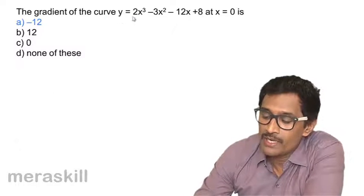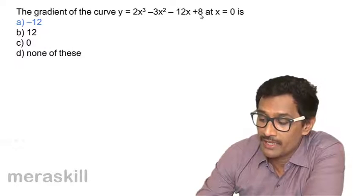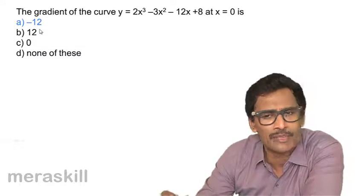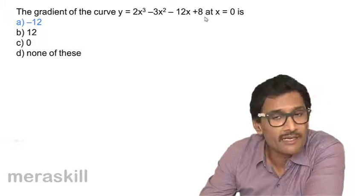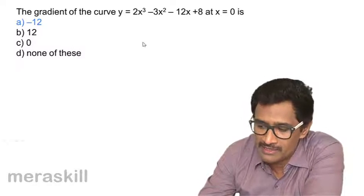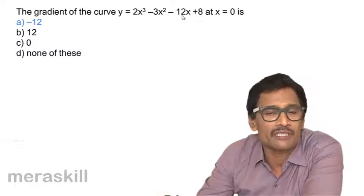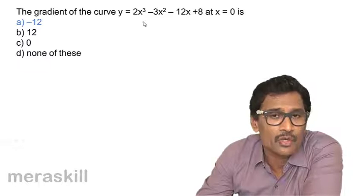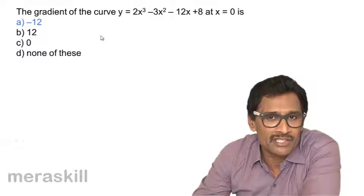The gradient of the curve y = 2x³ - 3x² - 12x + 8 at x = 0 is -12. The strategy was finding the derivative using nx^(n-1) and then substituting the value of x.